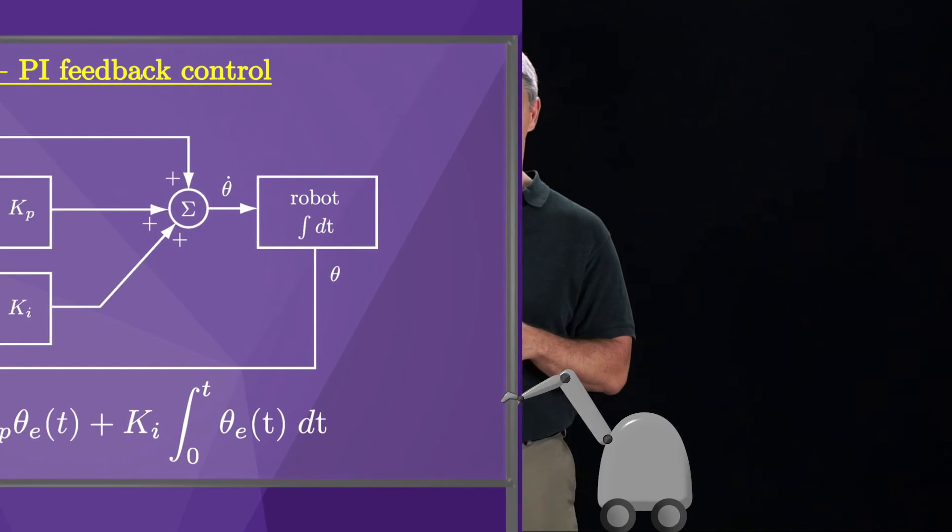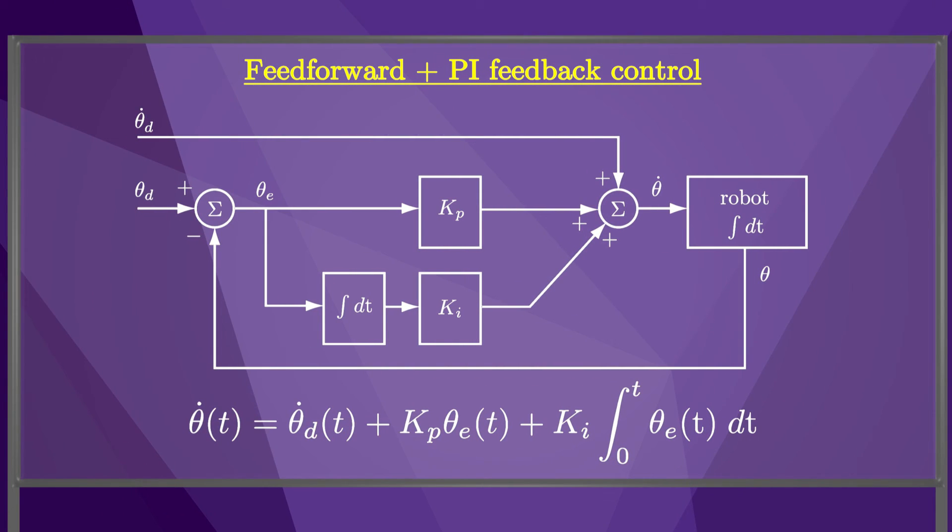Until now, we've been discussing a robot with a single joint, but the control law is unchanged for a multi-joint robot. Each joint has the same control law governing it. We can write the scalar equation for each joint as a single vector equation by treating theta, theta_d, and theta_e as vectors, and treating Kp and Ki each as an identity matrix times a positive scalar.